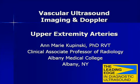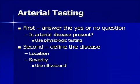To begin our discussion today on upper extremity arteries, it's first important to understand what kind of test you should do. The type of test you do is really determined by the question you want answered. When we come to arterial testing, the first question should be: is there arterial disease present? It's a yes or no answer, and physiologic testing will tell us the easiest and quickest whether or not disease is present.